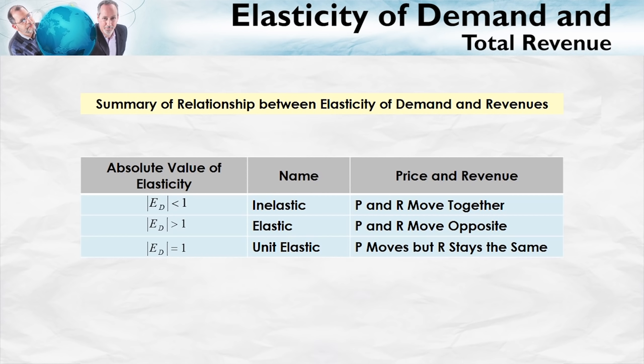Here's a summary of these relationships. When elasticity of demand is less than 1 — inelastic — price and revenue move together: when one goes up, the other goes up; when one goes down, the other goes down. When elasticity is greater than 1 — elastic — price and revenue move in opposite directions. And if elasticity equals 1, unit elastic, when price changes, revenue stays the same. You can memorize these, but it's much better to just sketch some graphs. I can always sketch an inelastic graph and with a few changes in price see whether the revenue rectangles are getting bigger or smaller.